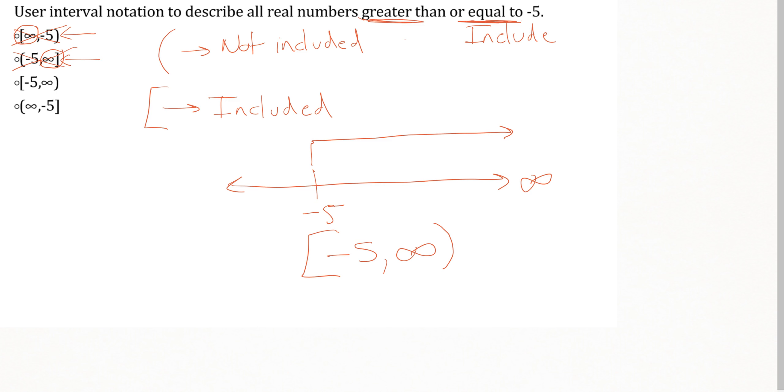If there was no equal sign on it, if it just said all real numbers greater than negative 5, that would just have said greater than. So we would have had a parenthesis on the negative 5, and then again it would have headed off to infinity with a parenthesis. But our specific example in this situation is option 3, where the negative 5 is included, so it has a bracket.